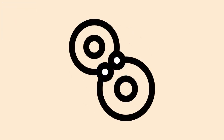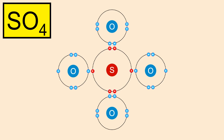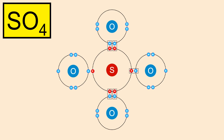Since both sulfur and oxygen want to attain electrons, the bonding between them is covalent bonding, where both share electrons to complete their respective octets. In the pictorial representation, the upper oxygen shares two valence electrons with sulfur, the lower oxygen also shares two electrons with sulfur, while the right-sided and left-sided oxygens each share one valence electron with sulfur.